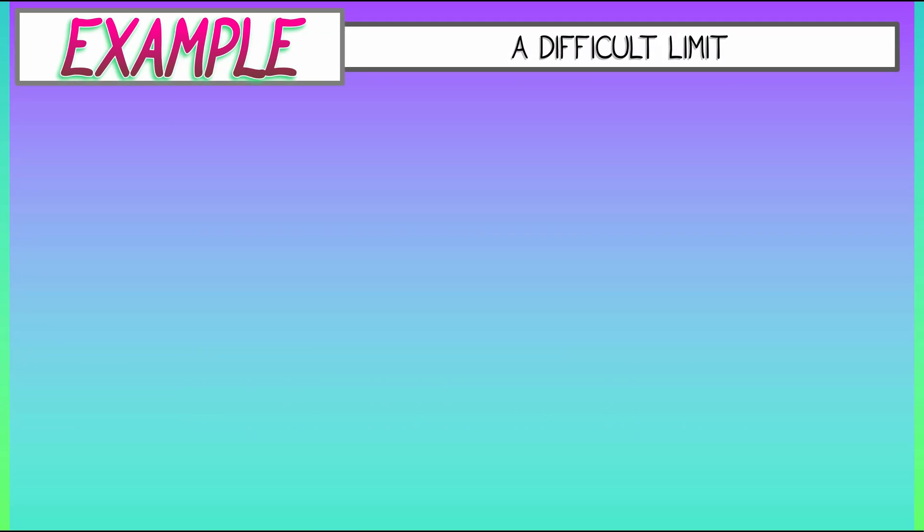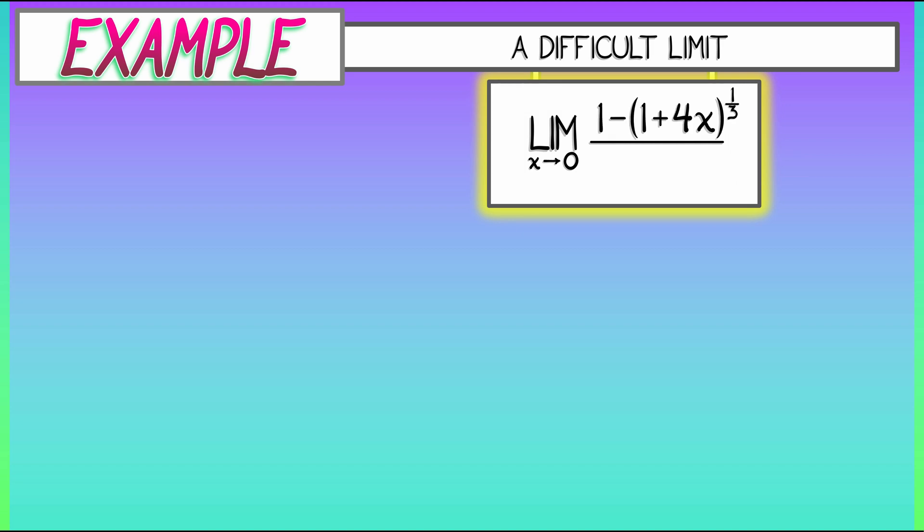Well, speaking of difficult limits, let's see how this works in a particular example. Consider the limit as x goes to zero of, in the numerator, 1 minus quantity 1 plus 4x to the one-third, that is the cube root of 1 plus 4x, and in the denominator, 1 minus the fifth root of quantity 1 plus 3x.